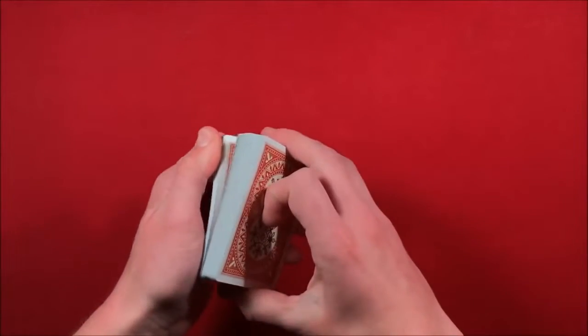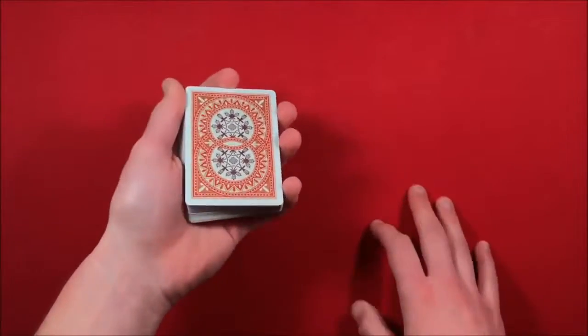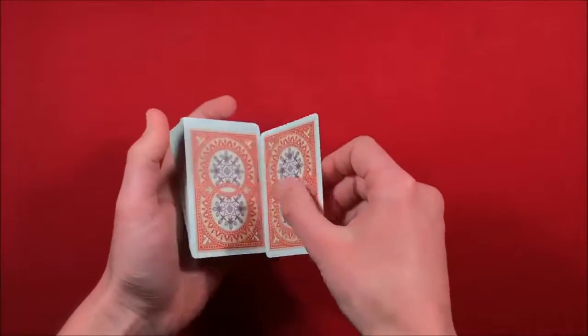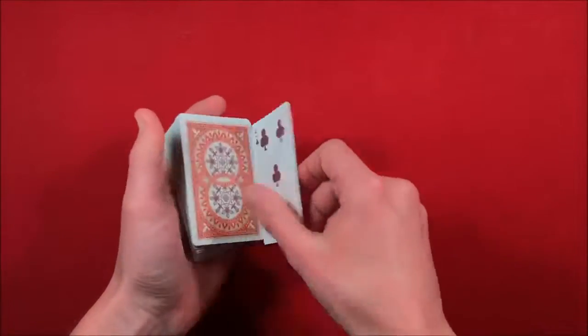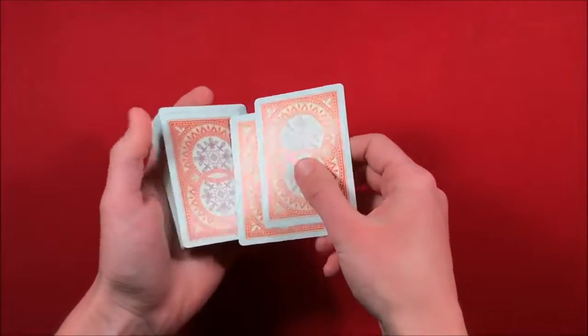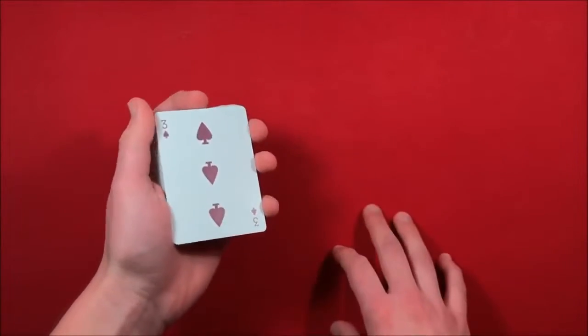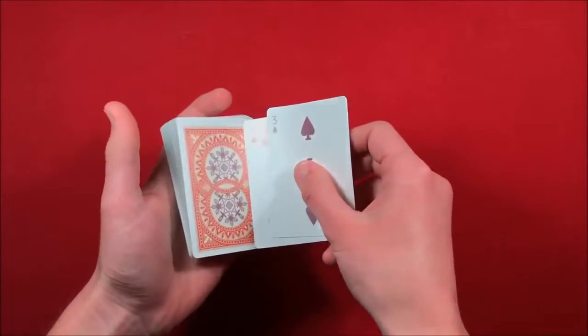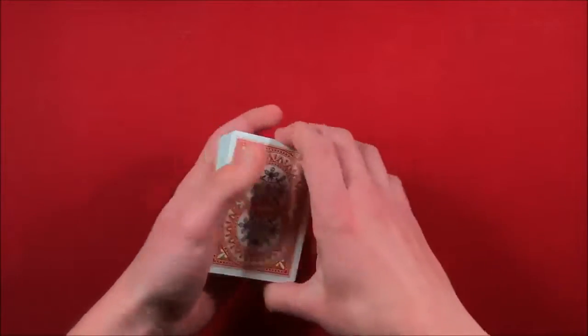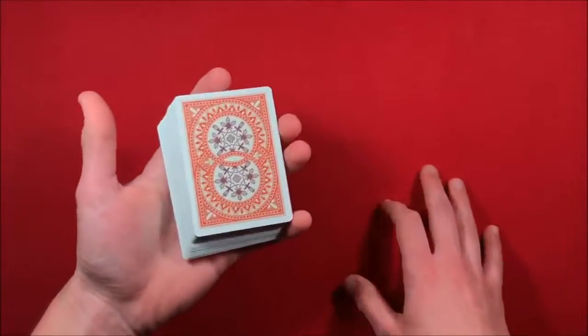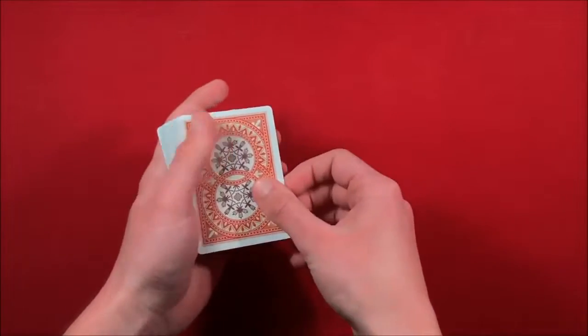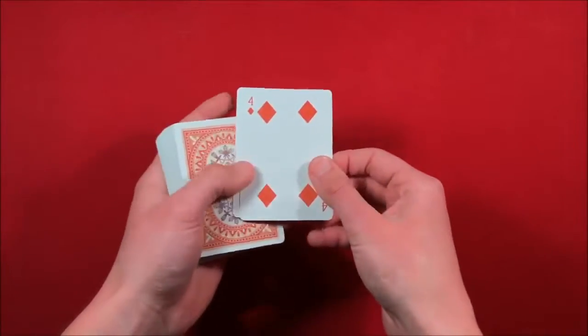So essentially what you're doing is, instead of flipping over one card when you're doing the trick, you're actually going to be flipping over two cards to make it look like you're flipping over one. And like I said, this video is directed towards beginners, so when you first do the double lift, don't be discouraged that it's going to look really sloppy, because it takes a while to get it to look smooth like that.